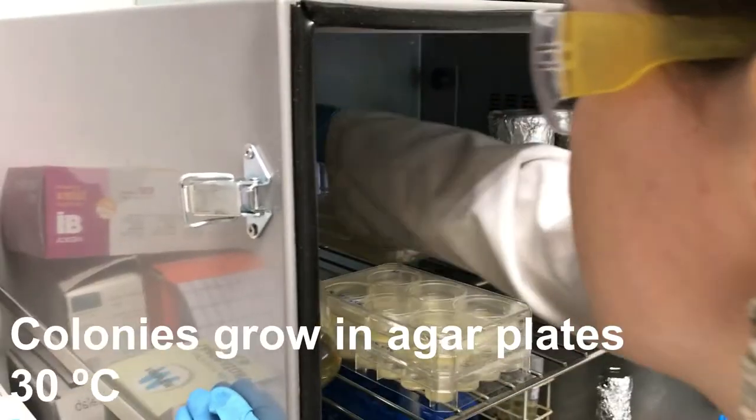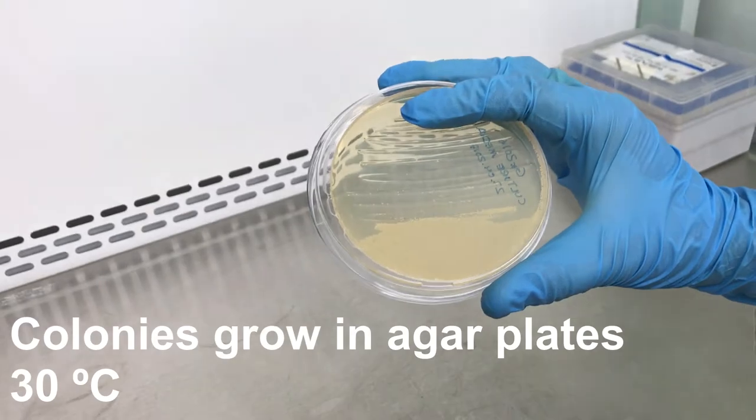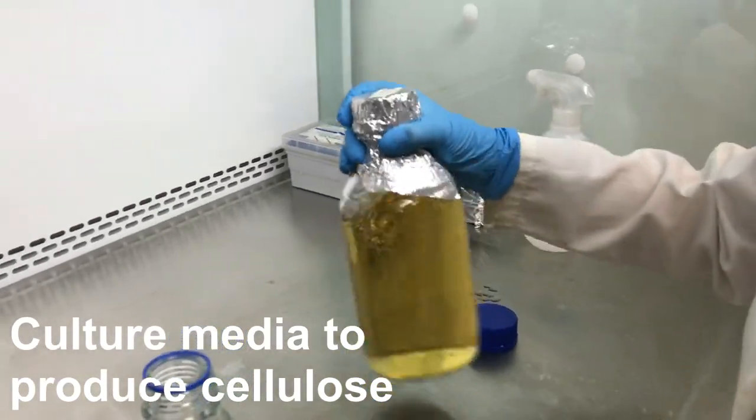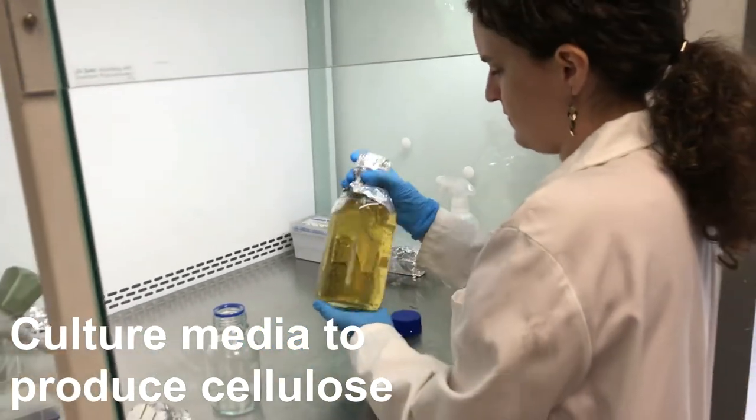We grow the bacteria colonies in agar plates at 30 degrees. That's what they like. And then, cellulose is produced when the bacteria are fed in a culture medium. The reason is still uncertain, but they do it.